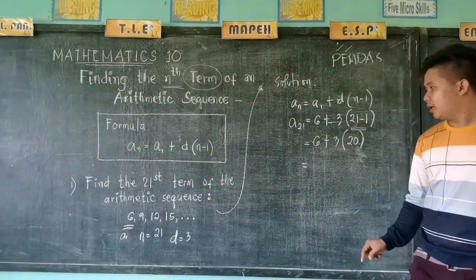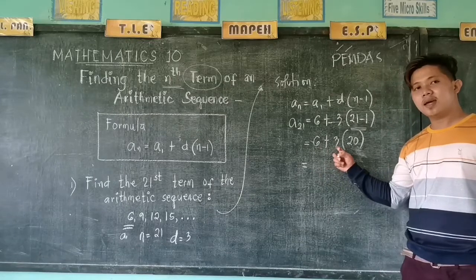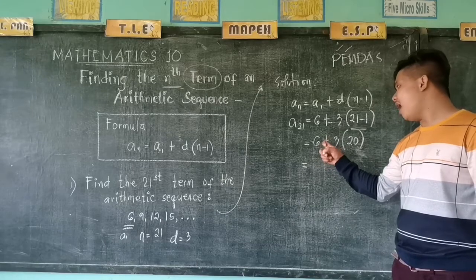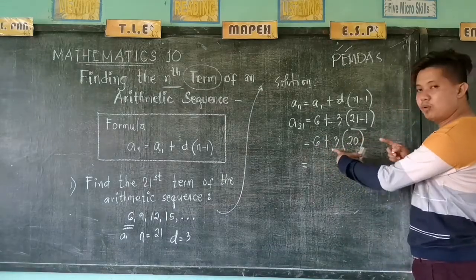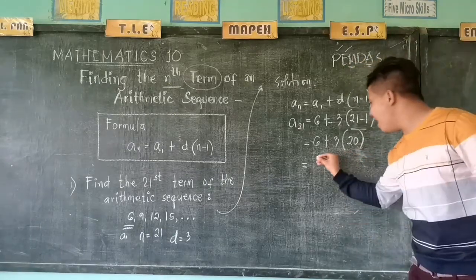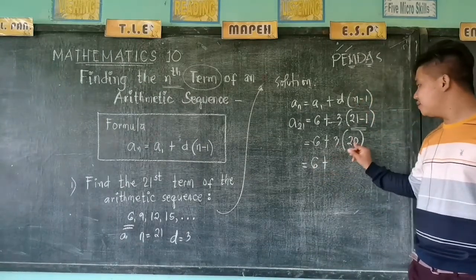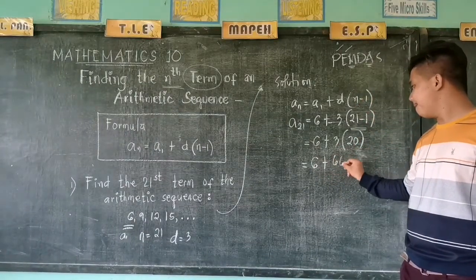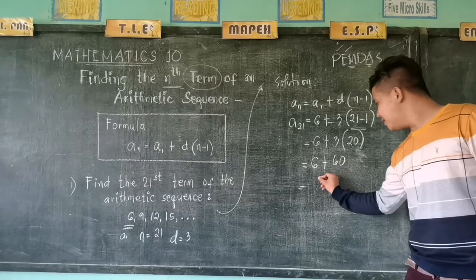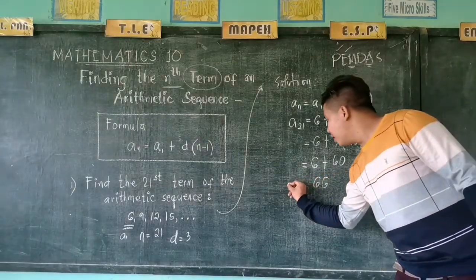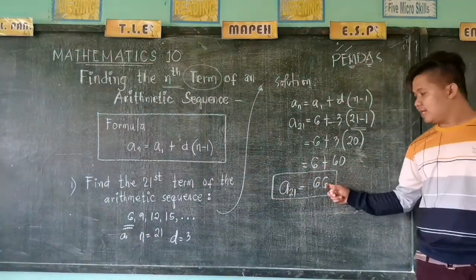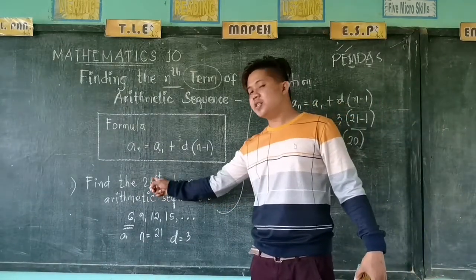Now, this time, can you add 6 and 3? No, you cannot add 6 and 3 because we still have multiplication. Multiplication first before addition. So we have 6 plus 3 times 20, that is 60. So this time you can add 6 and 60, that is 66. So therefore, our a_21 is equal to 66. That is our 21st term.